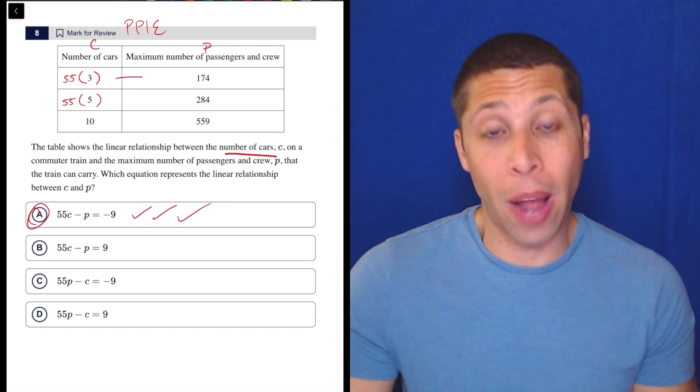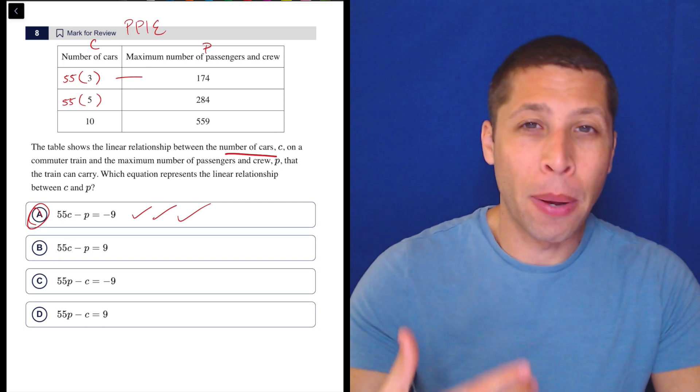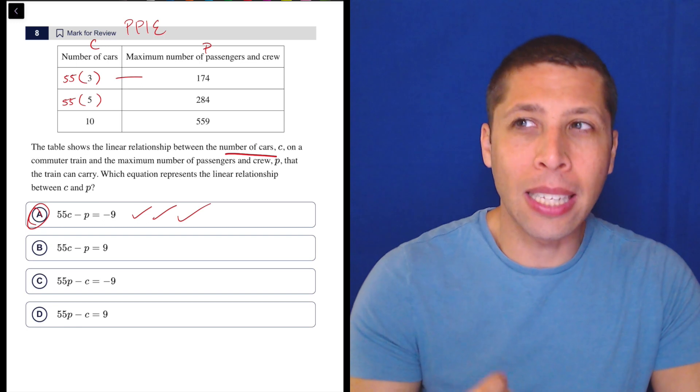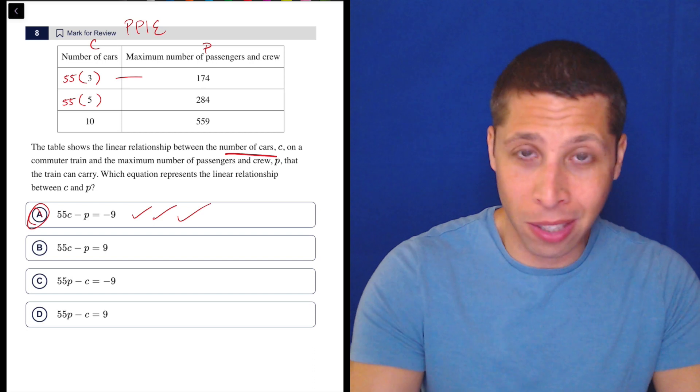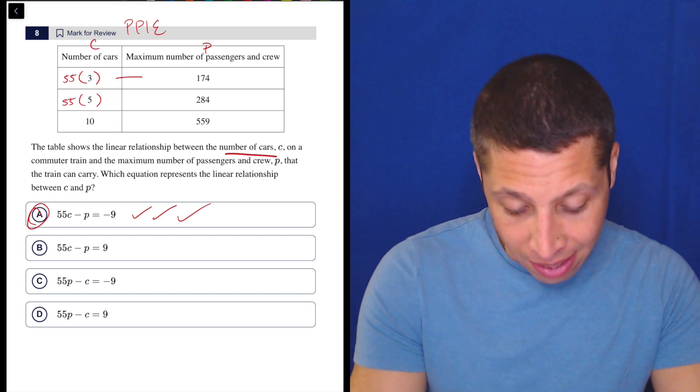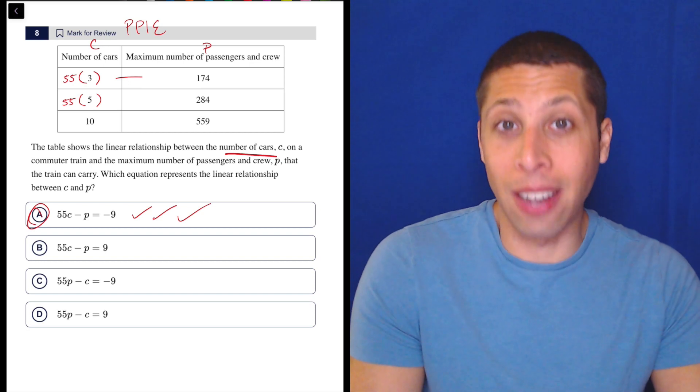So it just so happened that A was right. Obviously if D was right, this might have taken more time, but remember that it's very unlikely that you would get past plugging in that first point. So if we did it for B, the first point doesn't even work. I think C, same thing, none of them are going to work past the first point. So you're basically done there.